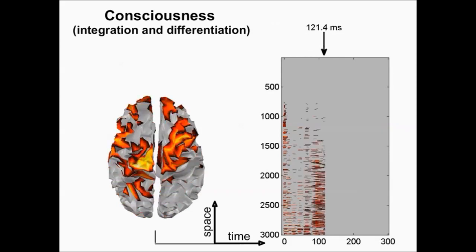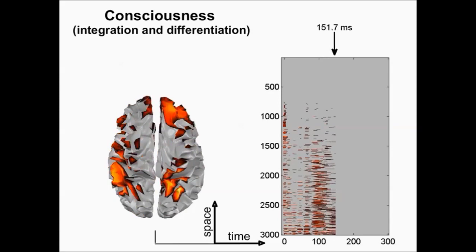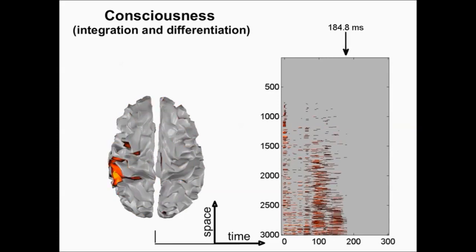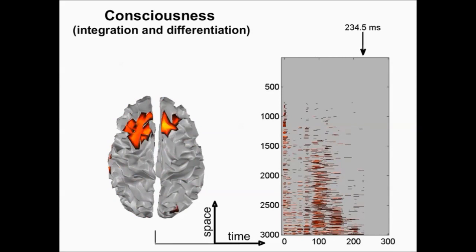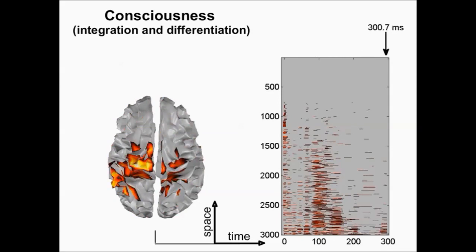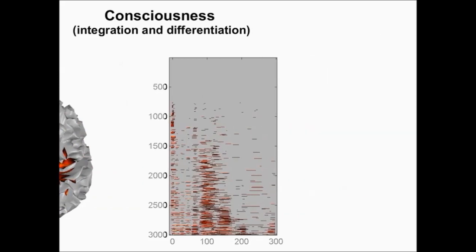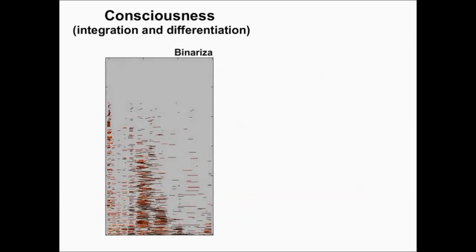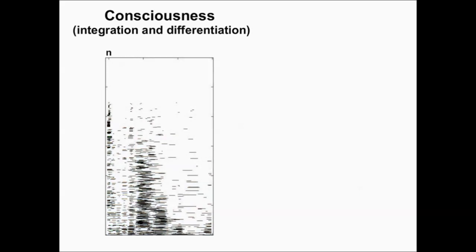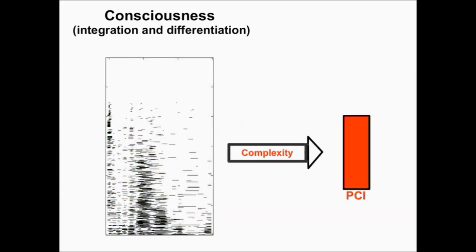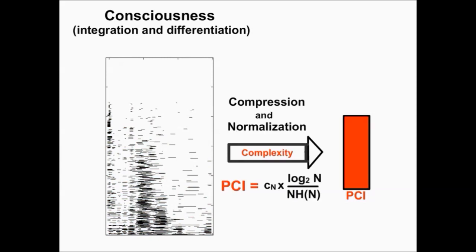The brain electrical response to the perturbation is then compressed — zipped — in order to calculate its complexity. That is what we call the perturbational complexity index, PCI. PCI is defined as the normalized Lempel-Ziv algorithm complexity of the spatiotemporal pattern of significant cortical activation measured by EEG and triggered by TMS.